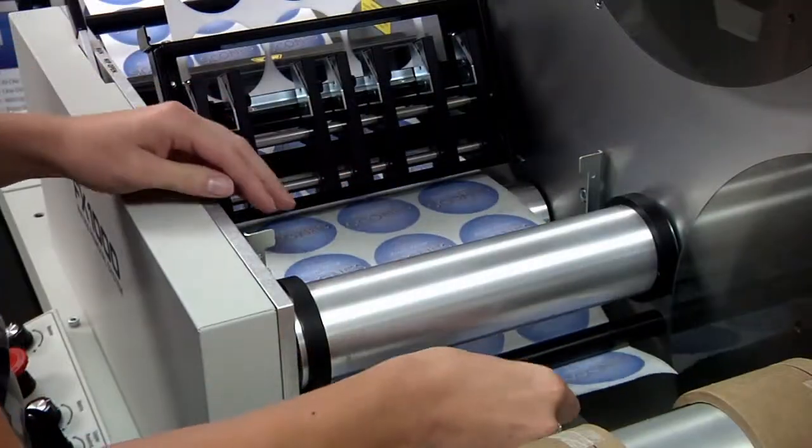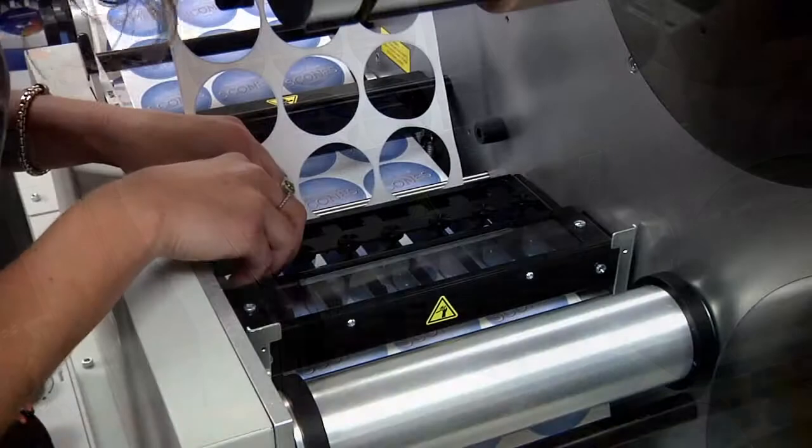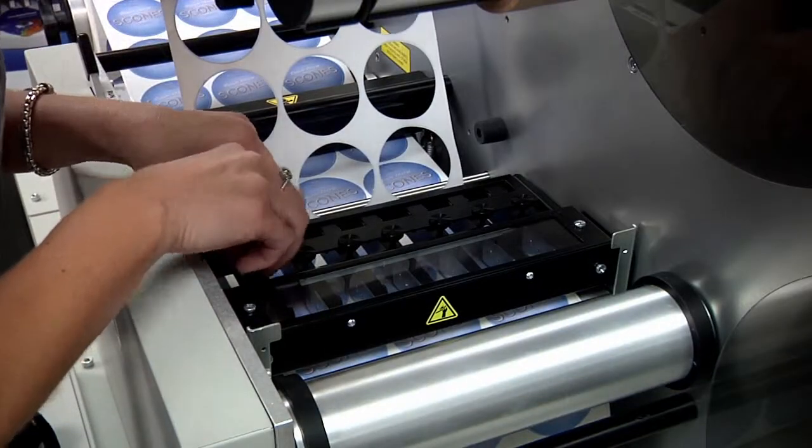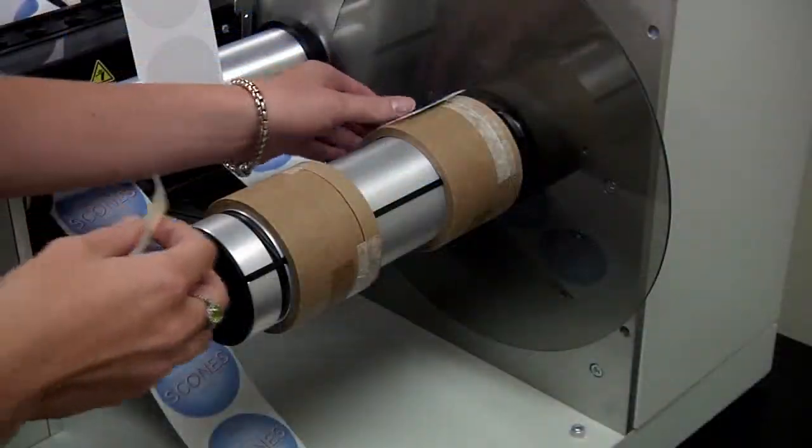Guide the labels through the slitter station. Adjust the slitters to the proper settings for your labels and tape the label strips onto separate cores on the rewind mandrels.